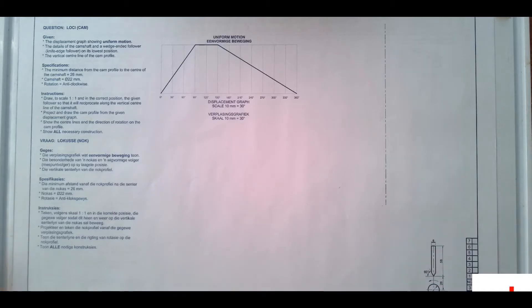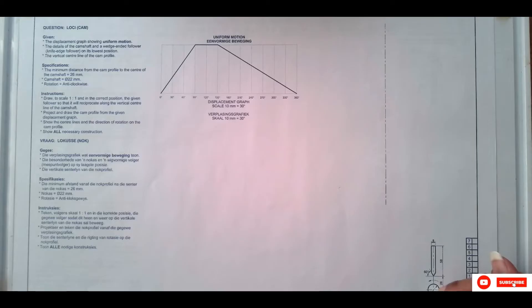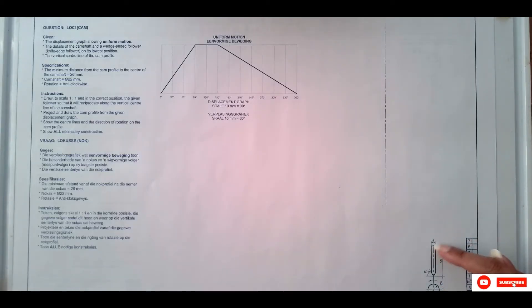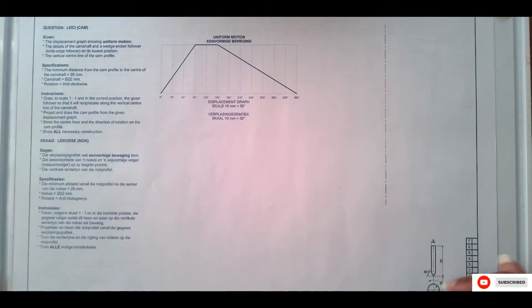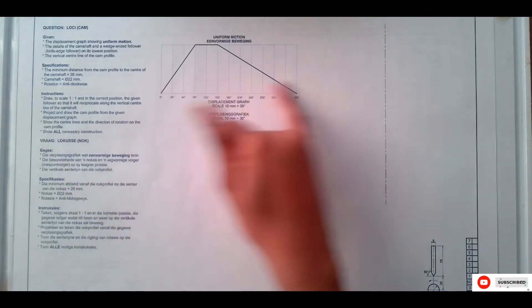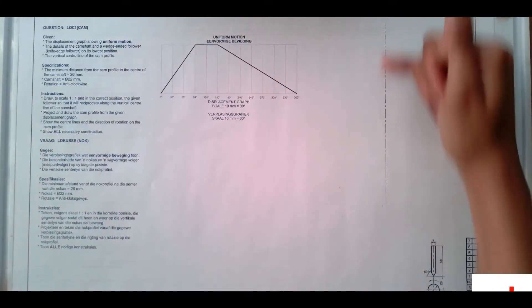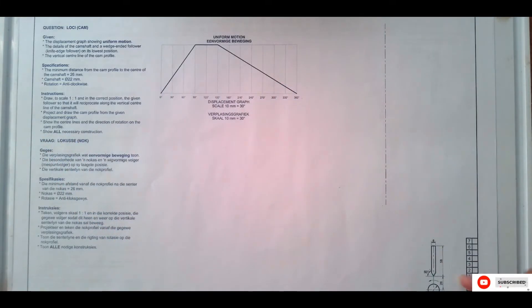As you can see in the given, you are given a follower and a camshaft. This type of follower is what we call a wedge follower. In this question we are given the displacement graph, and we are supposed to draw the follower and the shaft, then move on to drawing the cam profile.